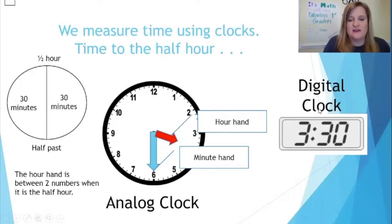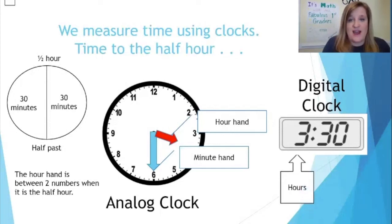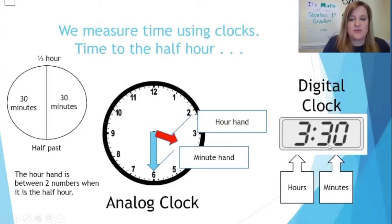Now let's look at the digital clock. The number to the left is the hours. Three hours have gone by and 30 minutes have gone by. So when you read the digital clock, you say it's 3:30. When you read the analog clock, you can also say it's 3:30, or you can say it's half past three.